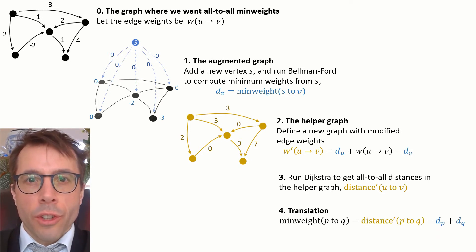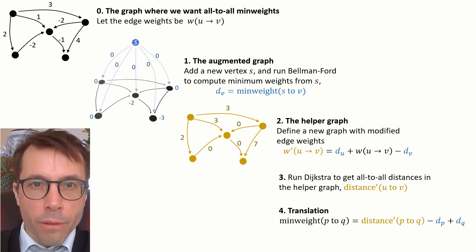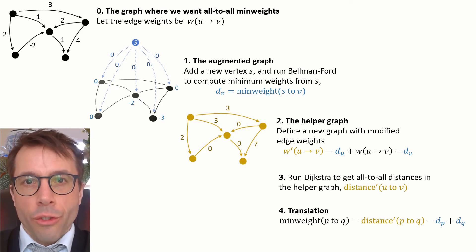Finally there's a translation step. We've just computed distances in the helper graph. We want minimum weights in the original graph, and there's a simple way to get at them. We just use those d values that we computed in step one, and that turns out to work.